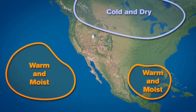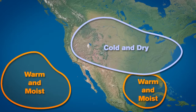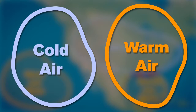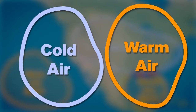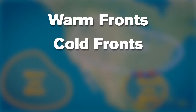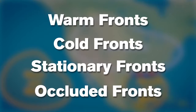As air masses move across the earth, they will eventually run into each other. The boundaries between these two air masses are referred to as fronts. Fronts are labeled in reference to the relative temperature of the air that is approaching and replacing the existing air mass. There are four types of fronts: warm fronts, cold fronts, stationary fronts, and occluded fronts.